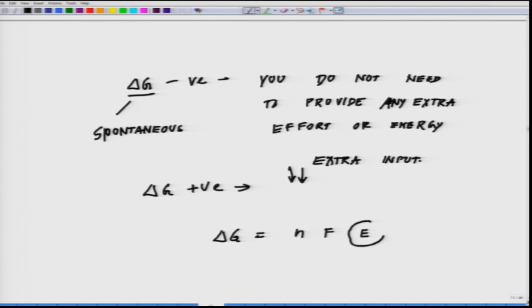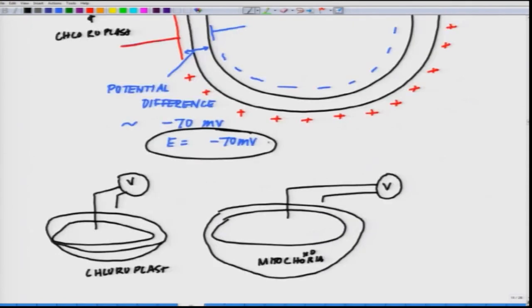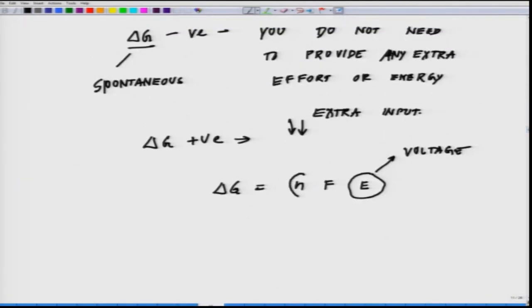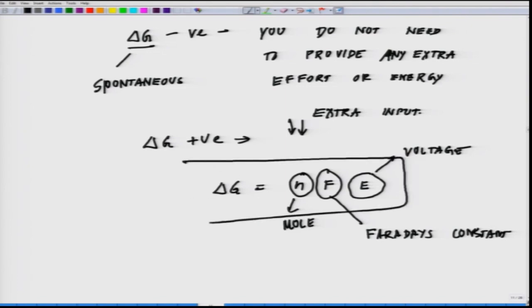Delta G positive essentially means you have to put that extra input. When we talk about delta G, when we have to calculate delta G, this is one formula which you have to remember: NFE, where E is your voltage, what we have talked about. If you remember out here, this is that E value delta G. N is the mole, molarity of the molecules what we will be talking about, and F is the Faraday's constant. These are some of the relations which will come very handy. Delta G is equal to minus NFE. This is essentially E. You have to remember it.